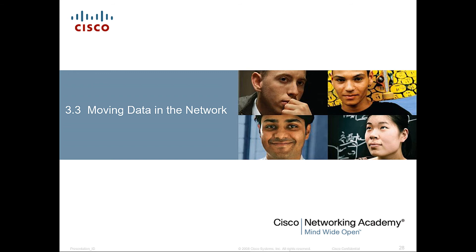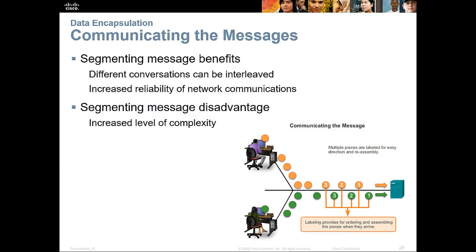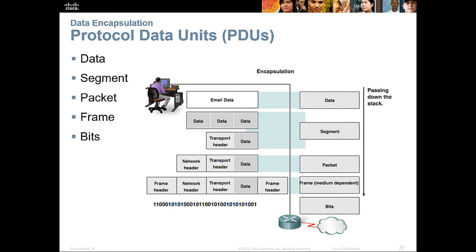Let's talk about moving data in the network. The benefits of segmenting messages include: different conversations can be interleaved, better reliability, and better efficiency. The disadvantage is it makes things more complicated. How do we name the items at each layer? At layers 5, 6, and 7, the unit is called data. At layer 4 (transport layer) it's a segment. At the network layer it's a packet. At the data link layer it's a frame. At the physical layer it's just bits.